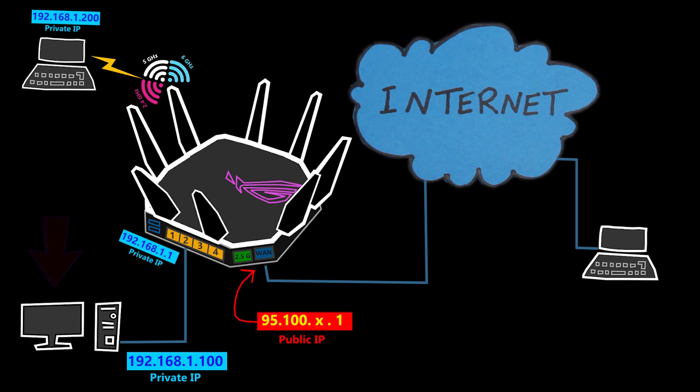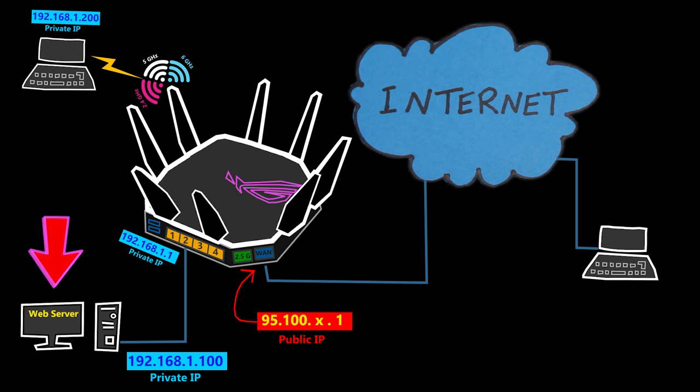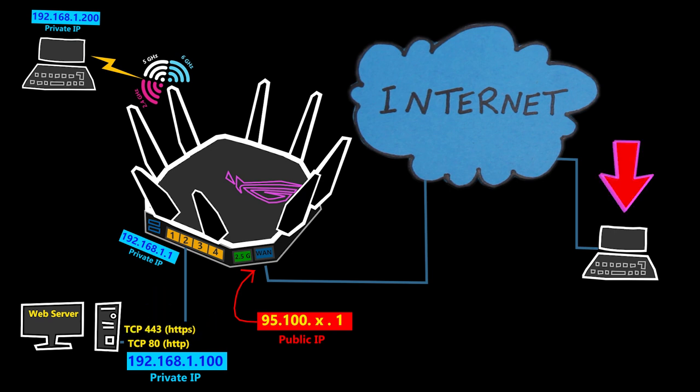Let's say this is the computer I need to access from outside my network. For example, let's say it's a web server, which means I'll need to access port TCP 80 and TCP 443 of its IP address from outside the network — TCP 80 is HTTP and TCP 443 is HTTPS. For simplicity, in this video let's only focus on HTTP, which is TCP 80.